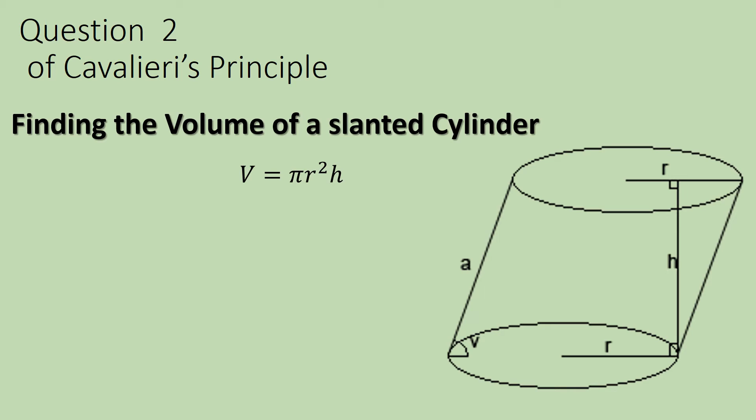Now as you look at this, we do not want to know A. A is your slanted height. Notice the H over there. That's your altitude and we're going to use it. And of course we're going to use the radius because we're looking for the volume of the cylinder. And it's always the area of the base times the height.